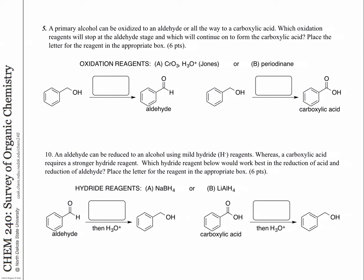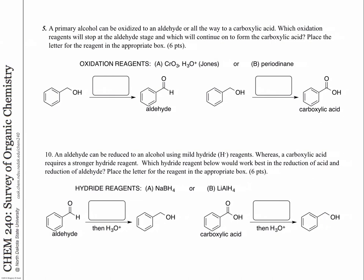Here's problem 5 and problem 10, because they were similar — one was about oxidation and one was about reduction. We talked about the ways in which you can make alcohols by reducing carbonyl compounds, or making carbonyl compounds by oxidizing alcohols. In this case, we have an alcohol to an aldehyde, and it stops there — so you need a mild oxidation reagent. This one is the alcohol all the way to the carboxylic acid — you need the stronger oxidation reagent. It's the chromium which does the oxidation all the way, and periodinane which stops at the aldehyde stage. Periodinane would not give the carboxylic acid, and the chromium would not stop at the aldehyde.